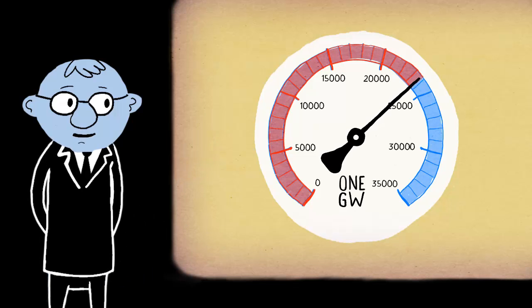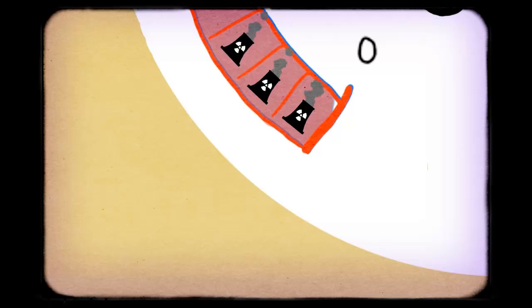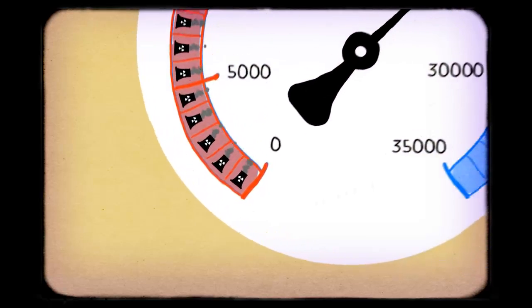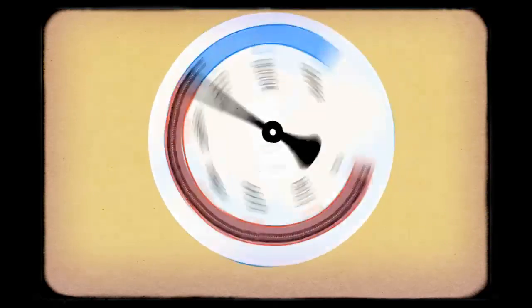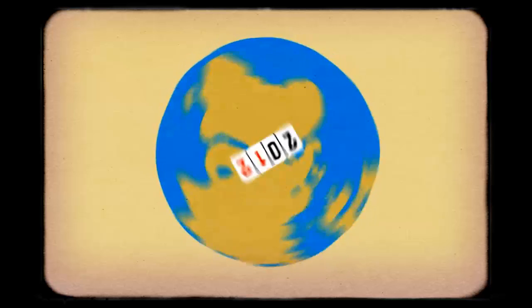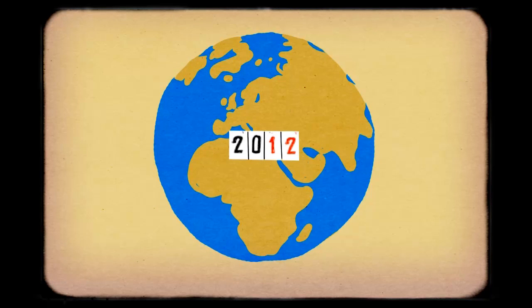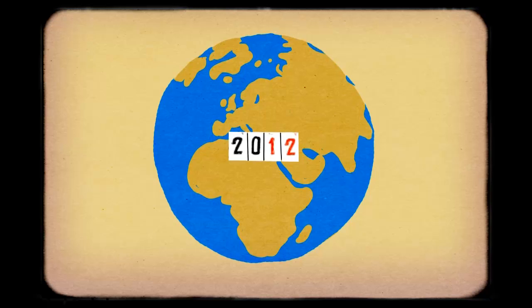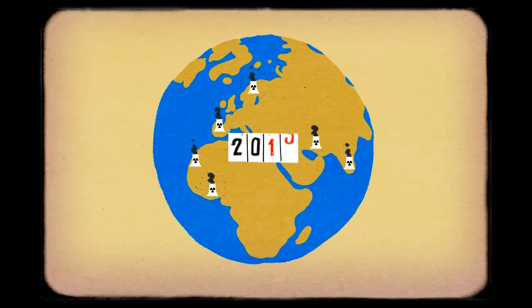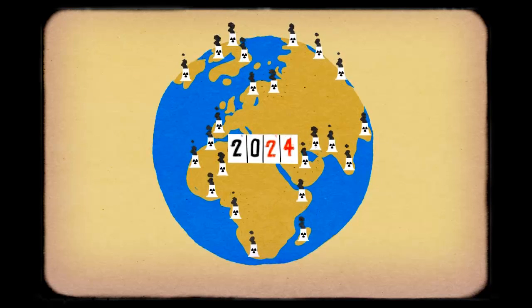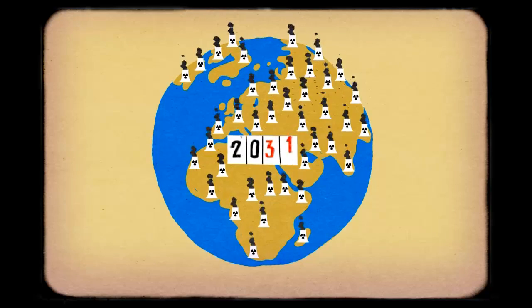I use the unit gigawatt here because it's easy to remember that one nuclear power plant is one gigawatt, so that means at the moment if we would run 100% nuclear, we would need 16,000 nuclear power plants. We want to reduce CO2, and that means that in the next 40 years we have to install 15,000 gigawatts of new capacities.